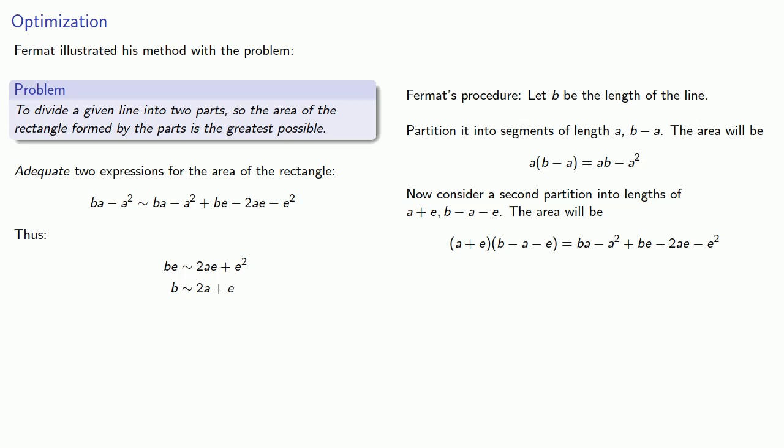And then Fermat says the following. We'll diminish e. And so b is equal to 2a, which gives us the solution a equals b over 2.